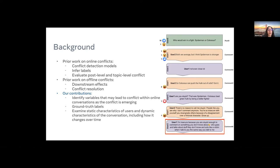Online and offline conflict research has primarily looked at the downstream effects of offline conflicts and also at conflict resolution techniques. In our paper, what we do is identify different variables or features that may lead to online conflicts as the conflict is actually still emerging. We do so with ground truth labels from a Facebook conflict comment reporting tool, and we examine both the static user characteristics and the dynamic conversation itself, including how it changes over time.